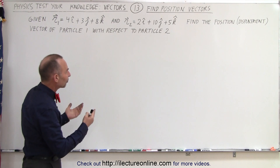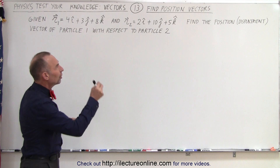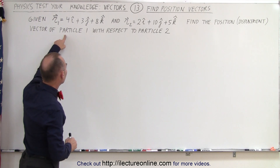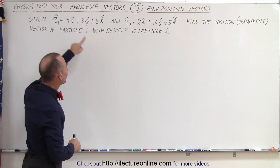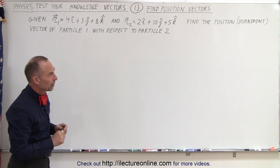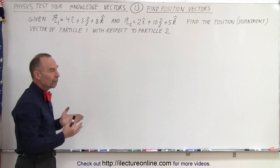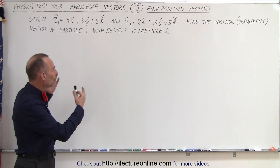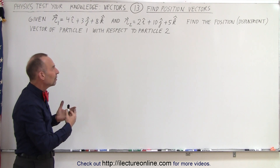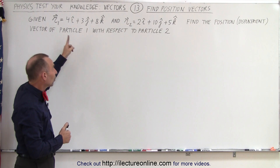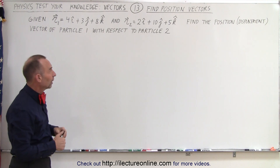Now what they're asking us is to find another position vector of the position of particle 1 with respect to the position of particle 2. So let's go ahead and draw the two position vectors to get a visual as to what that actually means and what the position vector of particle 1 with respect to particle 2 looks like as well.